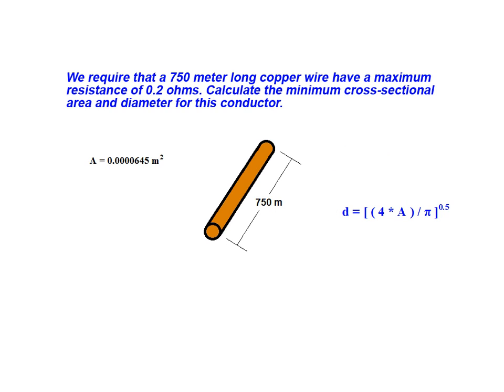We can now substitute our acquired cross-sectional area value into this relationship and calculate the diameter of the copper wire. By evaluating this expression, we arrive at a diameter of 0.009062 meters.